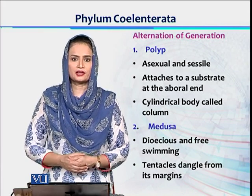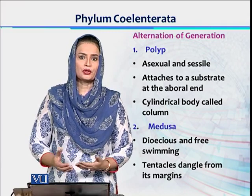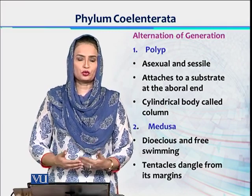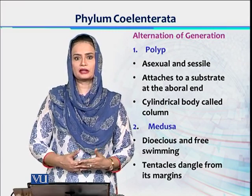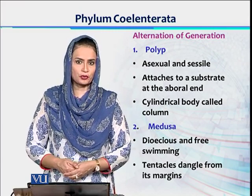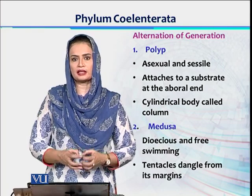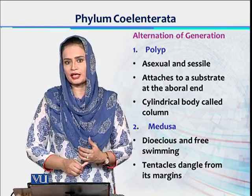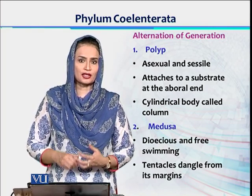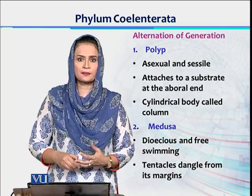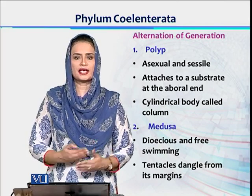Nematocysts have been found in phylum Cnidaria, and a characteristic of this phylum is alternation of generation. Here we have two types of reproduction — asexual reproduction and sexual reproduction — and the two forms perform these in a cyclical manner.